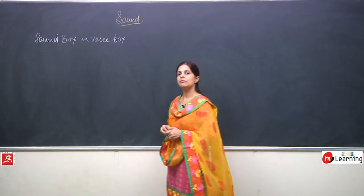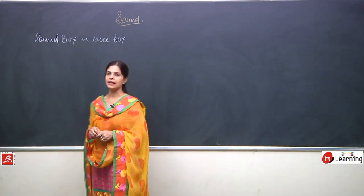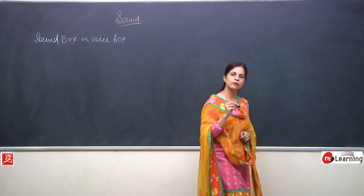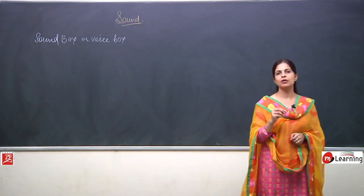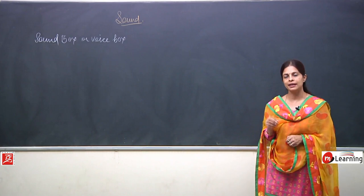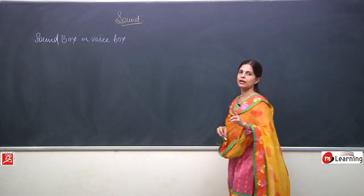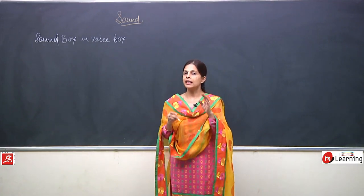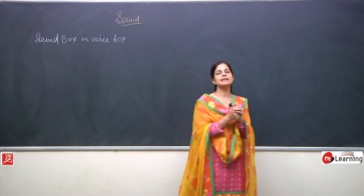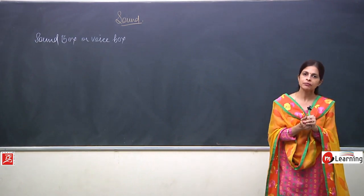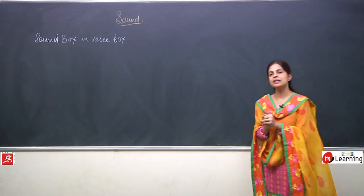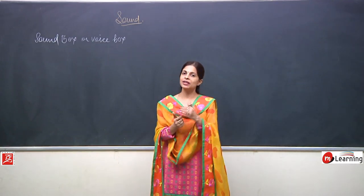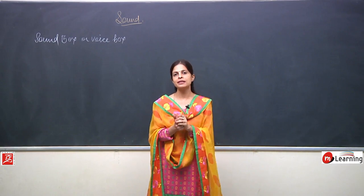Let me revise this once again. In our throat one organ is present which is known as voice box, also known as larynx. Larynx is made up of two vocal cords, and between these two vocal cords a slit is present. Whenever the air passes between this slit, sound is produced.